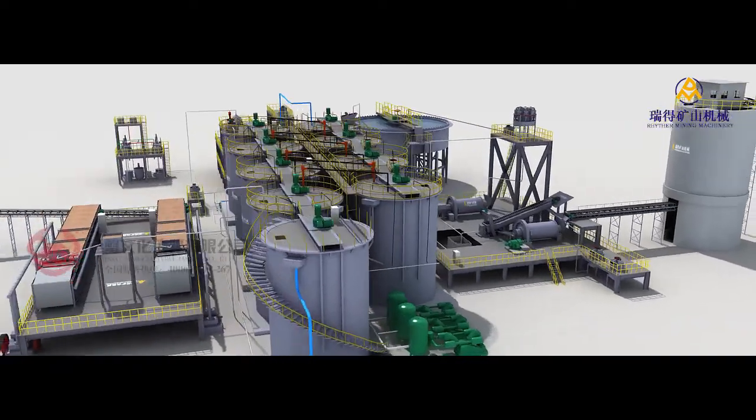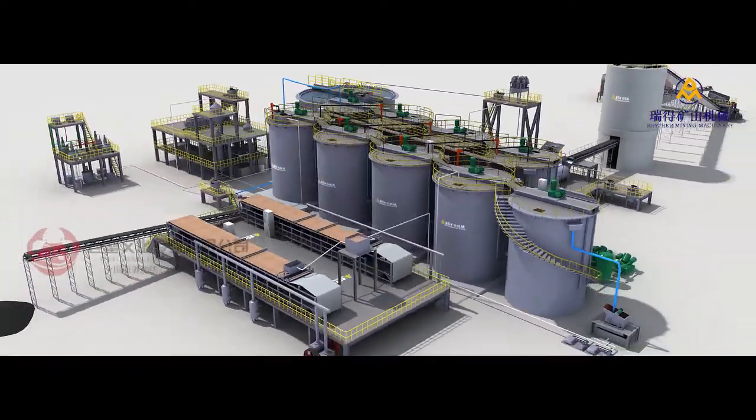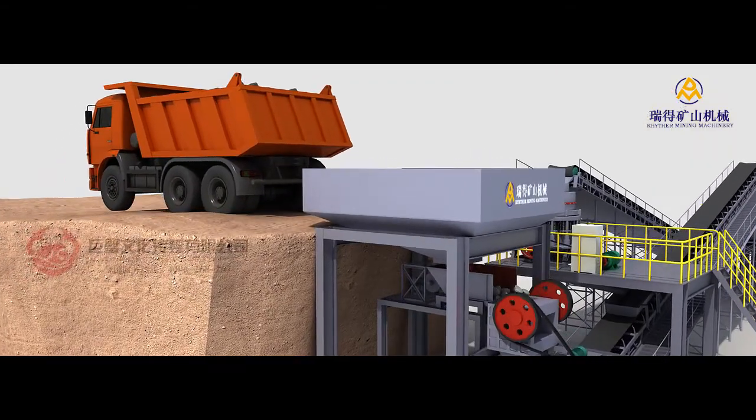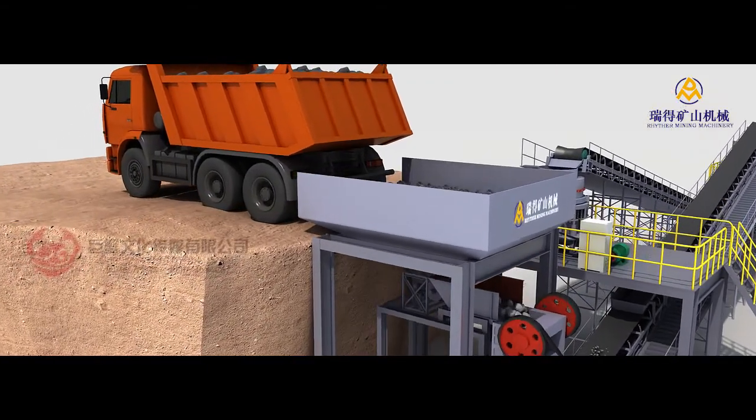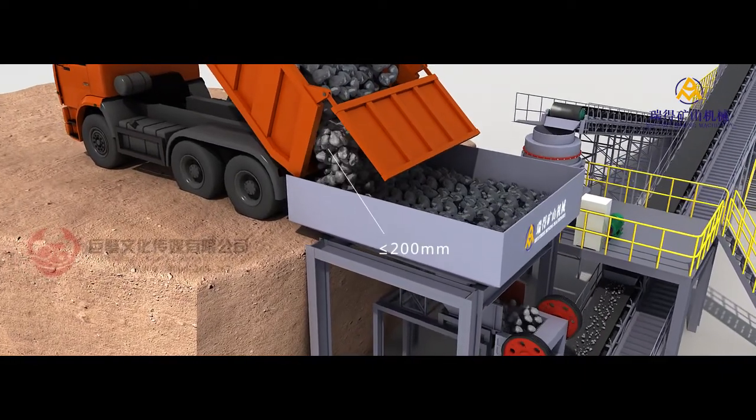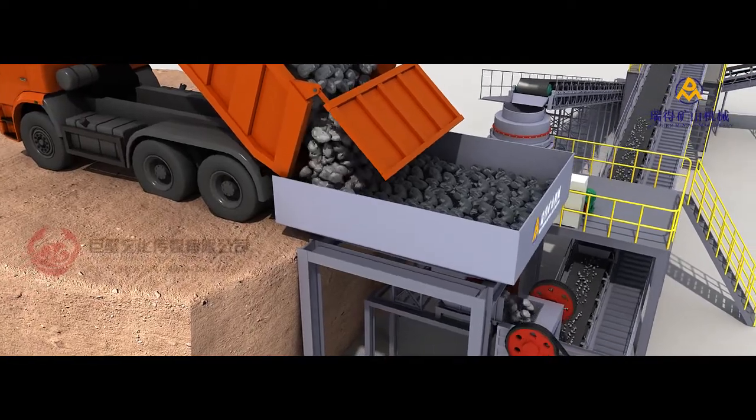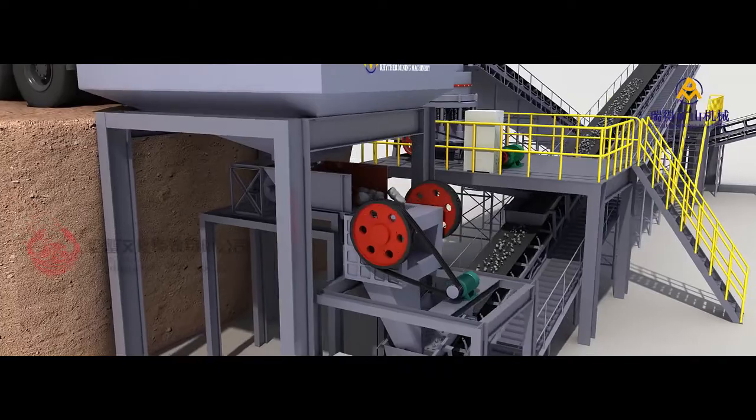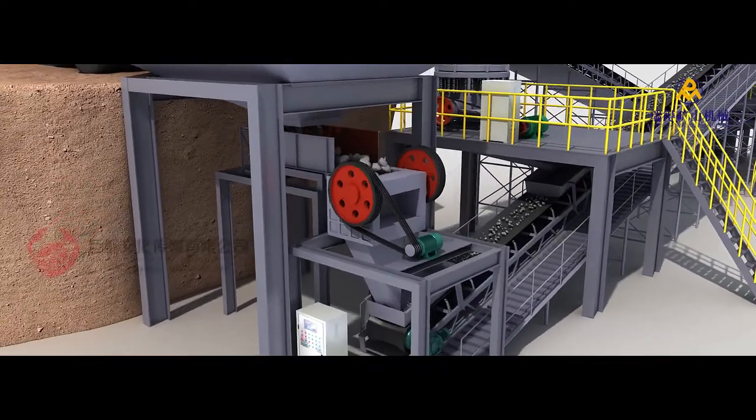The plant adopts advanced CIL process. Crude ores with maximum particle size of 200 millimeter will be transferred to crude ore bin by truck and screened by Grizzly on top of crude ore bin to prevent lump ores and other debris from getting into the bin. Materials entered into crude ore bin will be evenly fed into single stage jaw crusher by feeder.